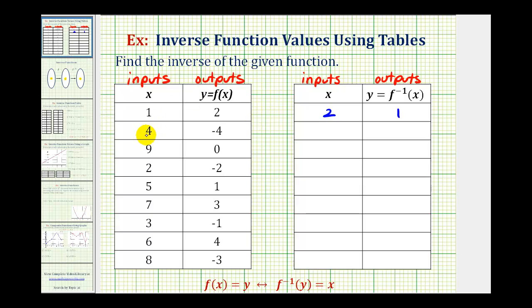When the input is four for f, the output is negative four. So when the input for f inverse is negative four, the output is positive four. The outputs for function f become the inputs for the inverse function, and the inputs for function f become the outputs for the inverse function.